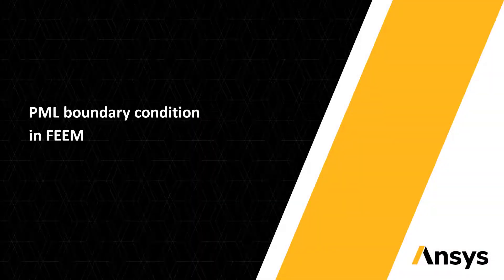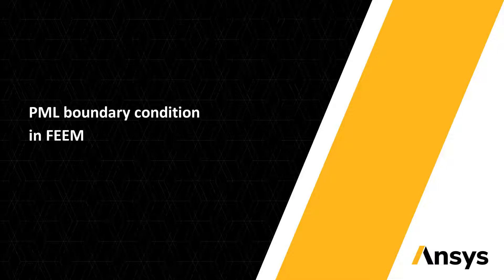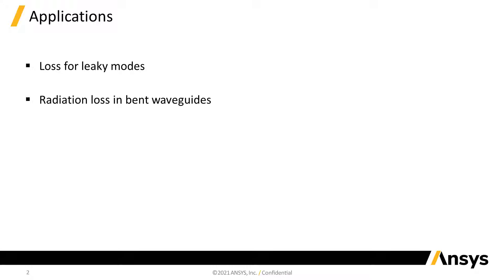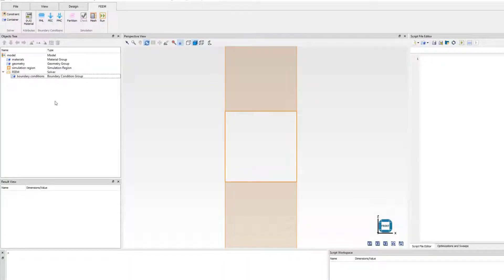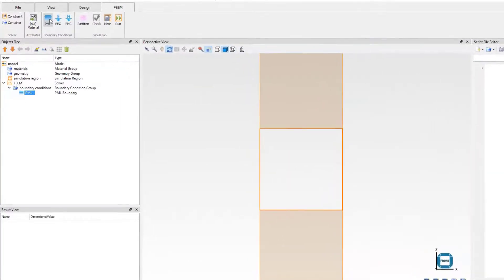Hi, in this week's Spark video, we introduce the ability to add PML boundary conditions in FIME. To calculate losses of leaky modes or radiation losses in bent waveguides, it is necessary to have boundary conditions that replicate open boundaries. This is done using the PML boundary condition, which has been available in most solvers and is now available in FIME.